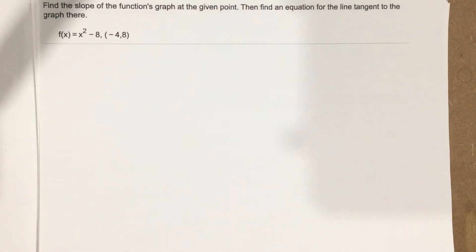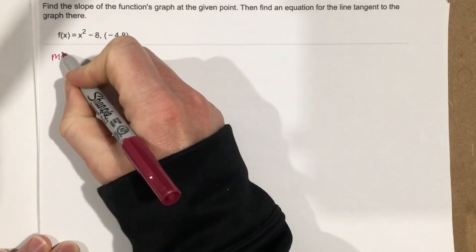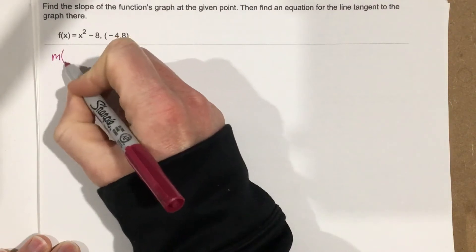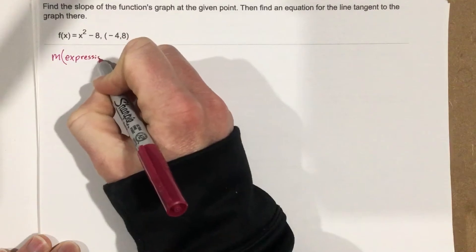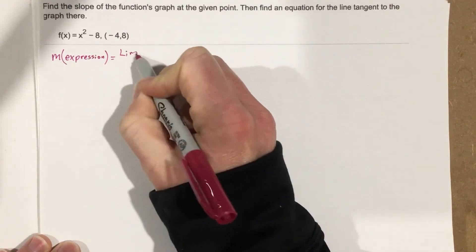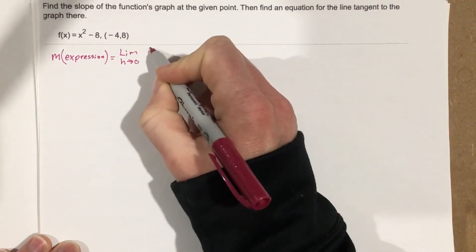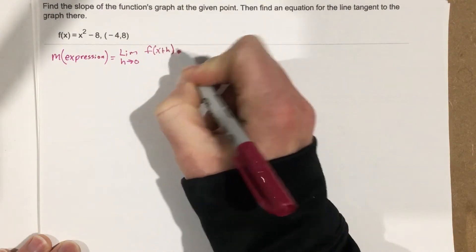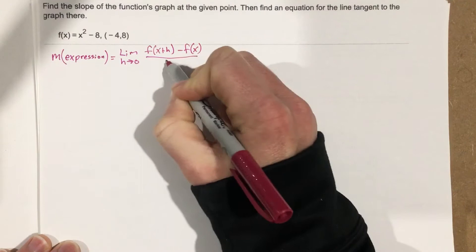So the first thing we want to do is find the slope, or the slope expression, because that's what we're really looking for to begin with. The slope expression is going to be the limit as h approaches 0 of f(x+h) - f(x) all over h.